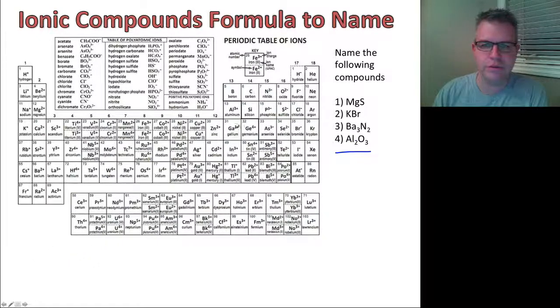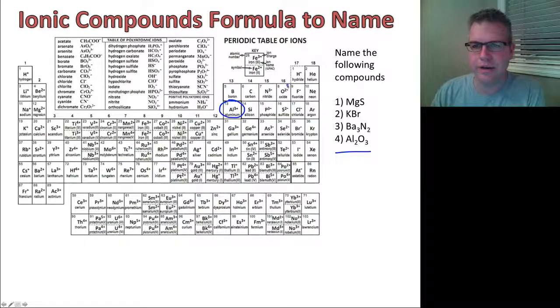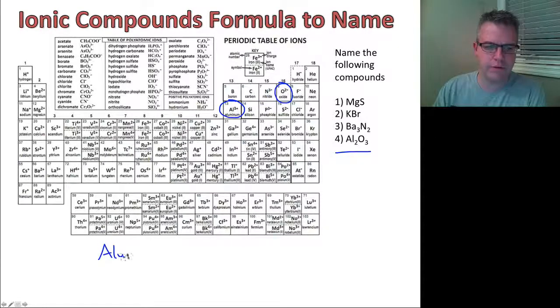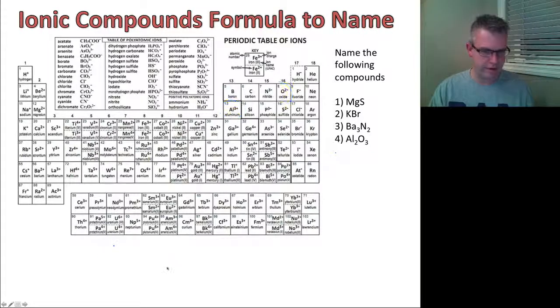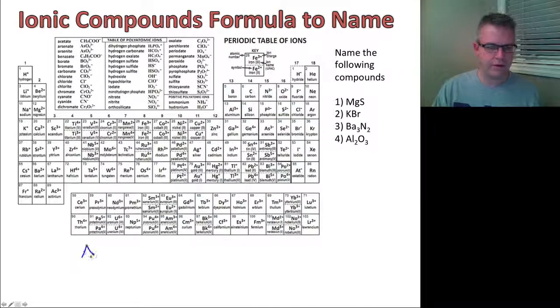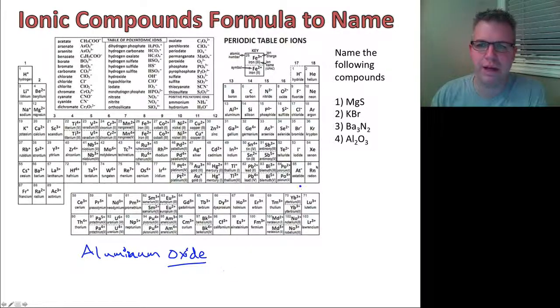Let's go to our last one. Al2O3. Aluminum is right here in the middle. And O we know is for oxygen. So this is aluminum oxide. We always write the name of the anion as it's found on the periodic table.